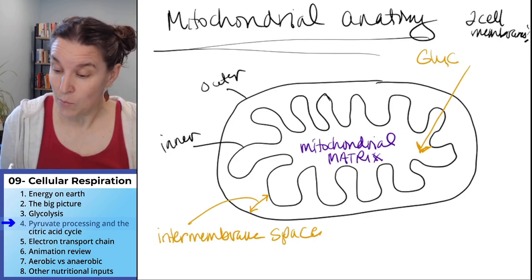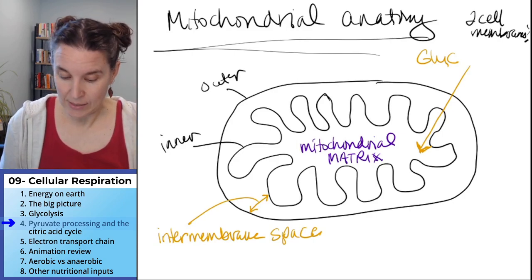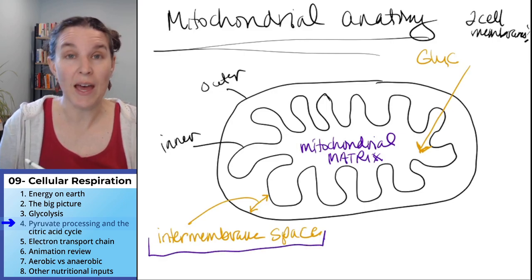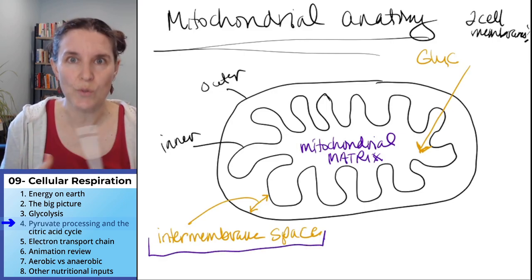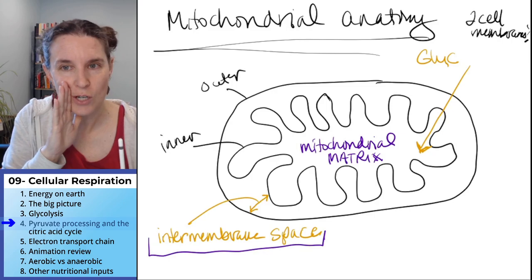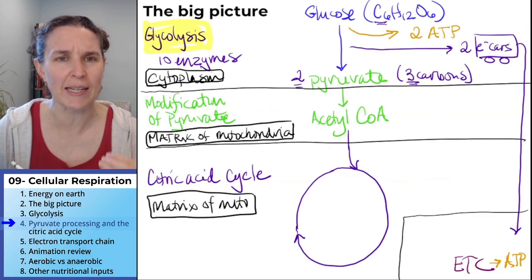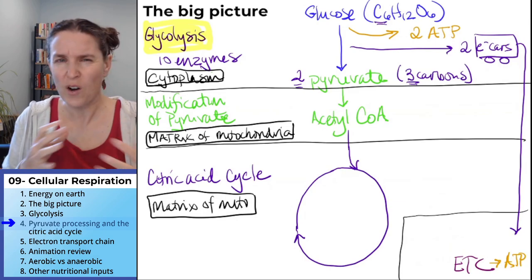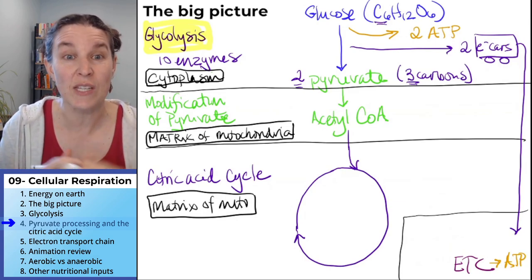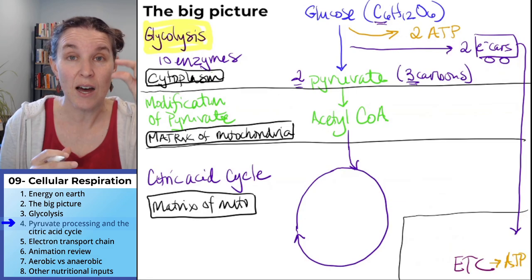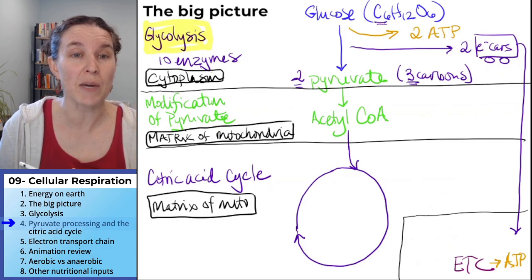The fact that I labeled the intermembrane space means you probably should keep that in your brain because we're going to use that for the electron transport chain. But in the meantime, let's go back and continue with what are the products that we're going to get out of these two stages of cellular respiration that are happening in the mitochondrial matrix.